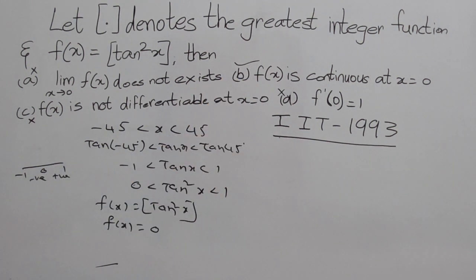Therefore, what is the correct answer here? f(x) is continuous at x = 0. f(x) = 0 is a constant function. It is continuous and it is also differentiable. f'(x) = 0, f'(0) also 0.